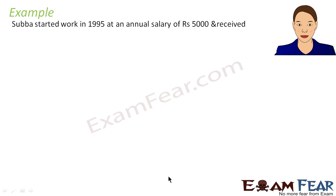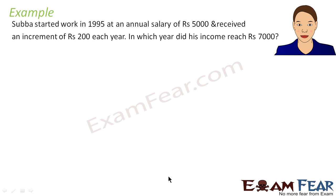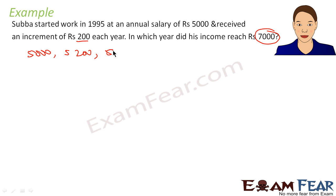Let's take one more example. Subha started work in 1995 at an annual salary of 5,000 rupees and received an increment of 200 rupees each year. The question is: in which year did her income become 7,000 rupees? Her starting salary is 5,000 rupees, then 5,200, then 5,400, and keeps increasing.